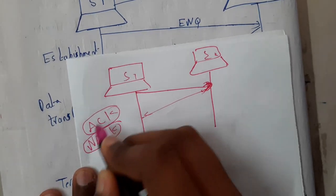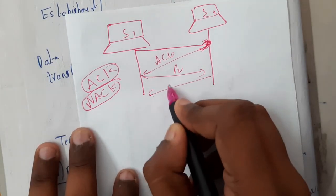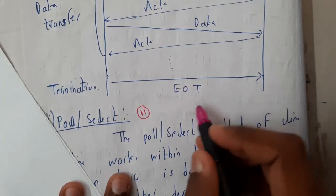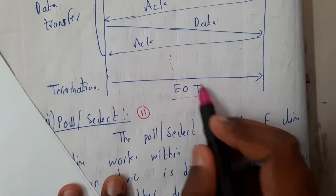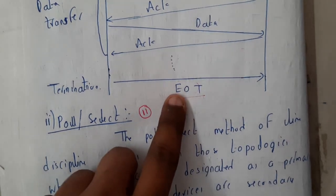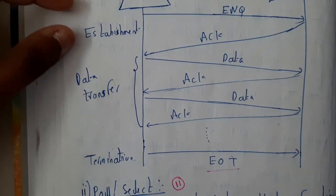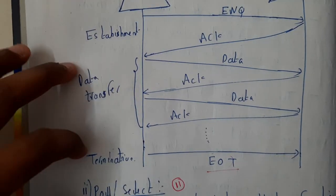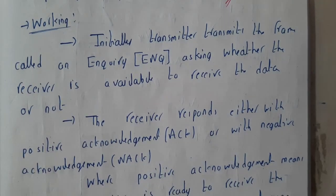If S2 sends the acknowledgement, S1 starts sending data. S2 again sends acknowledgement, S1 sends more data, and this process continues until the data is completed. At the end we use EOT, which is End of Transmission — that is the termination of transmission. So the initial stage of enquiring and getting the acknowledgement is establishment, the middle part is data transmission, and the last part is termination.